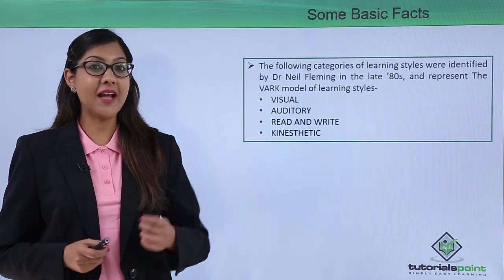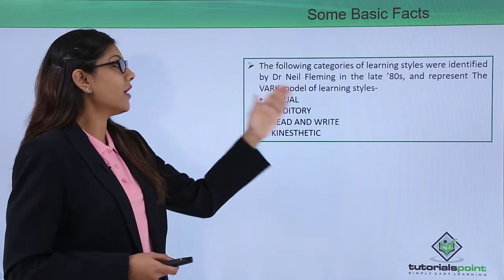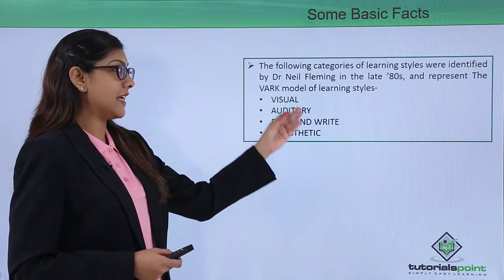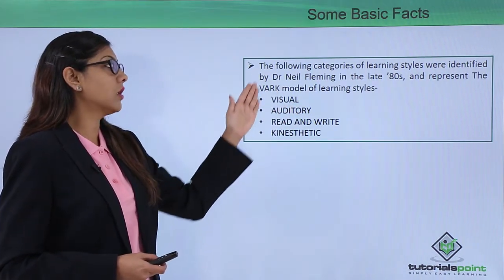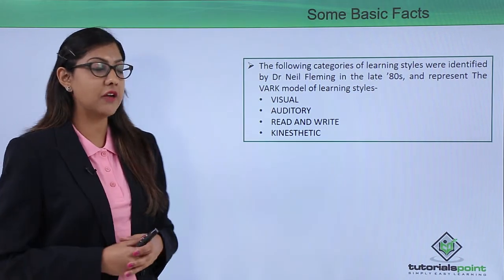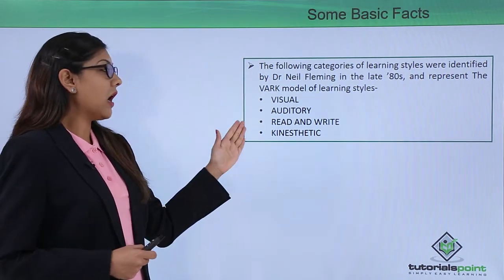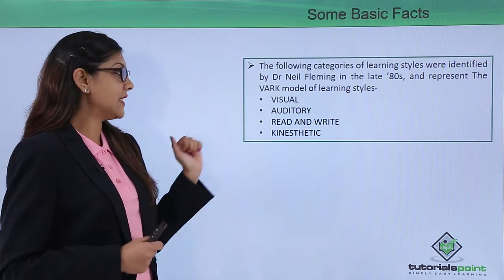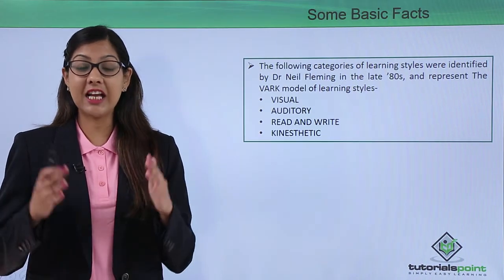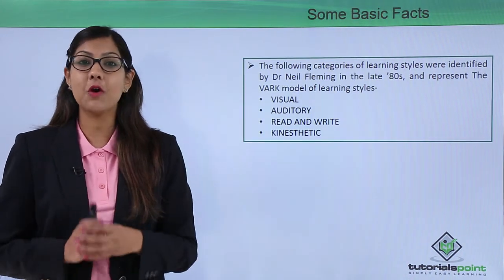Some basic facts about learning styles: the following categories were identified by Dr. Neil Fleming in the late 1980s and represent the VARK model of learning style. VARK stands for: V for Visual, A for Auditory, R for Reading and Writing, and K for Kinesthetic. Dr. Neil Fleming researched all four of these different patterns of learning style.